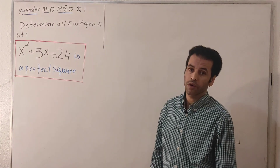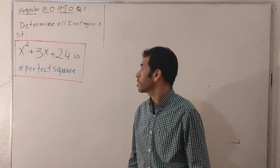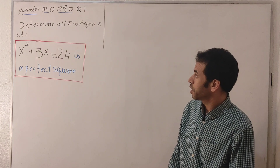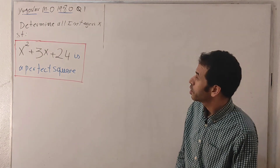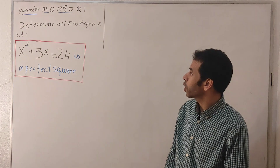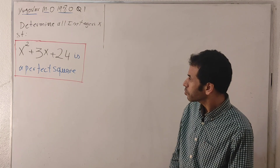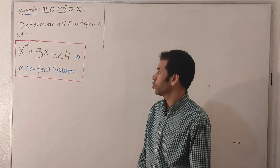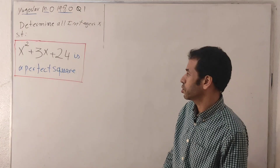In today's video I would like to introduce a very nice problem from the Yugoslav Mathematical Olympiad, edition 1980, question number one. Determine all integers x such that the given expression is a perfect square.